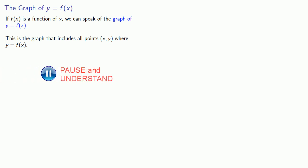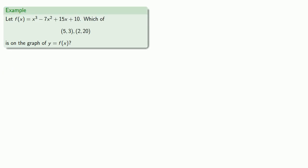So let's lay down some introductions. If f(x) is a function of x, we can speak of the graph of y = f(x). And just like when we graphed equations, what we mean by this is the graph that consists of all points (x, y) where y = f(x). With the exception of the use of function notation, this is really the same thing we did when we looked at graphs the first time.